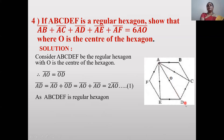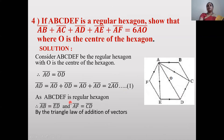Since O is the center, AO̅ and OD̅ are equal vectors (same direction and magnitude), so AO̅ = OD̅. By triangle law, ĀD̄ = ĀŌ + ŌD̄. Since AO̅ = OD̅, ĀD̄ = ĀŌ + ĀŌ = 2ĀŌ. Suppose this is equation 1.